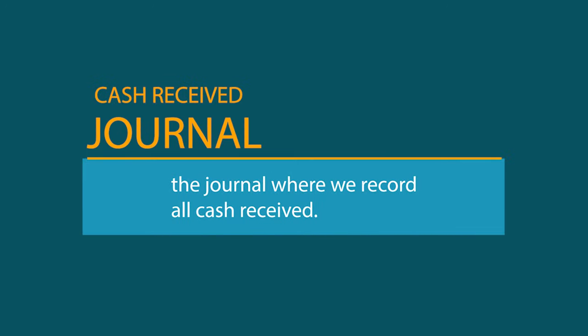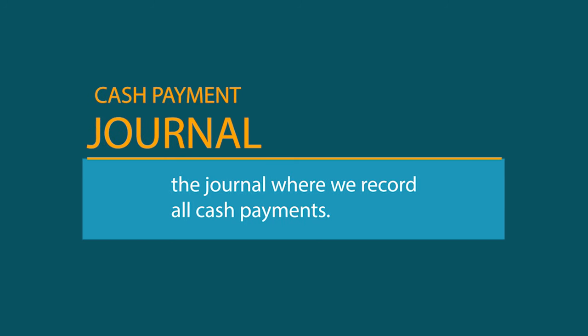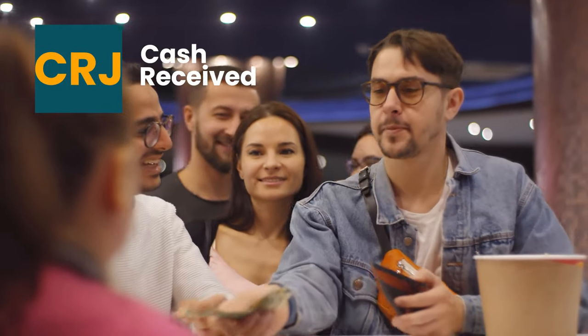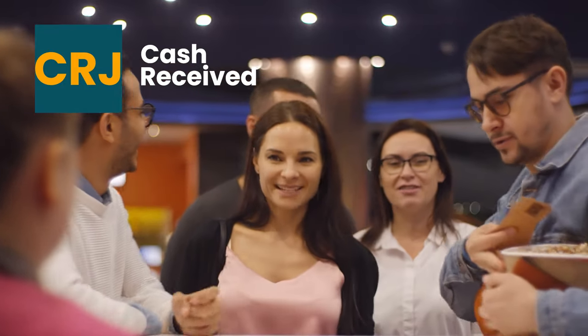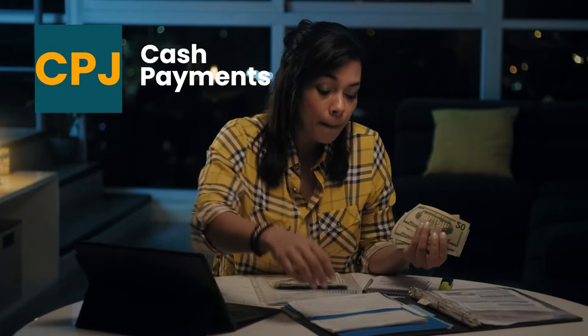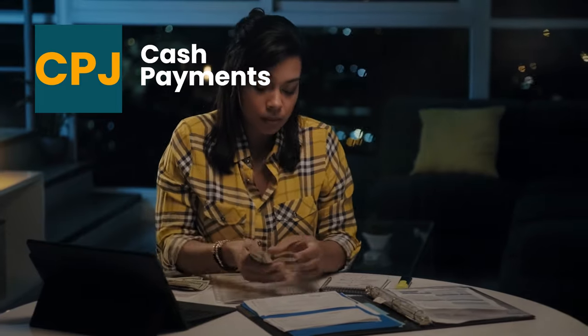There are two types of subsidiary journals to summarize these transactions. The cash receipt journal, or CRJ, is the journal where we record all cash received. And the cash payment journal, the CPJ, is where we record all the cash payments of the business. Today, we will be focusing on the CRJ, the cash receipt journal.